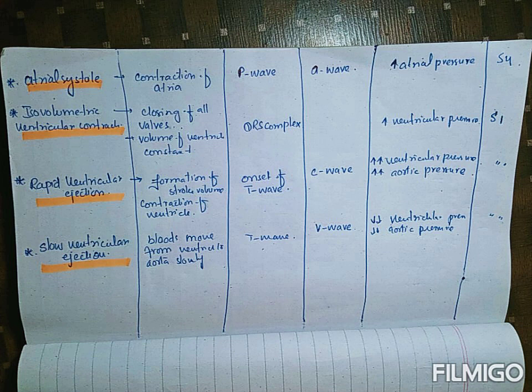First I will tell you about the opening and closing of valves producing the heart sounds. When all the valves of the heart are closed — either the AV valves or the semilunar valves — the volume in the ventricle is constant, and this phase is known as the isovolumetric phase.